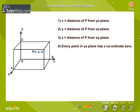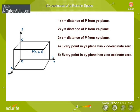Every point in YZ-plane has x-coordinate zero. Every point in XY-plane has z-coordinate zero. Every point in XZ-plane has y-coordinate zero.